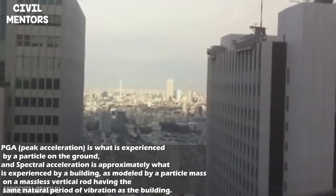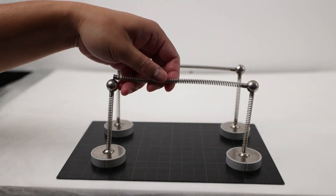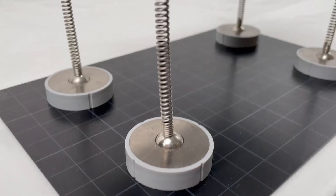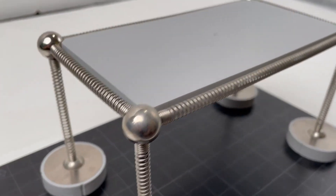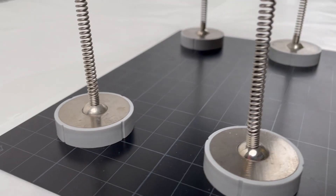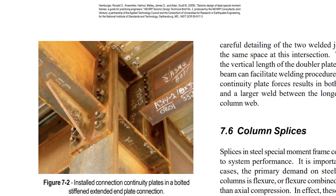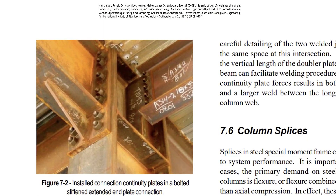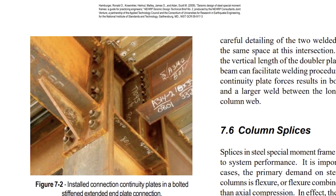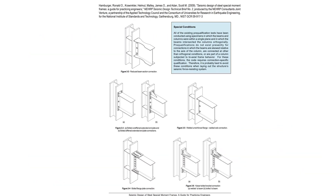The next step is to design the building to withstand the expected ground motion. The design should ensure that the building can remain standing during and after an earthquake without collapsing or suffering significant damage. This can be achieved through the use of reinforced concrete and steel structures and by ensuring the building has a regular, symmetric shape.